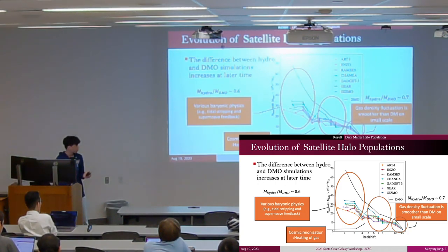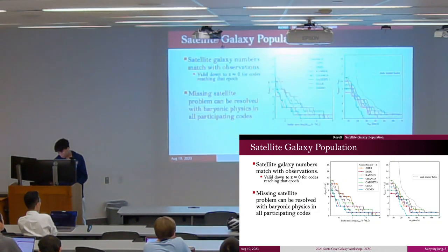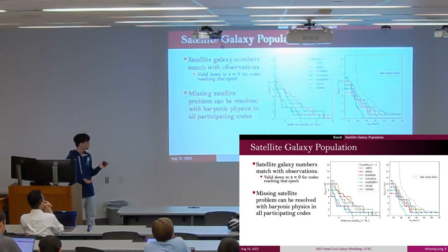We observe that baryonic physics hindered the halo growth regardless of specific codes used. Now, let's move on to the satellite galaxies.